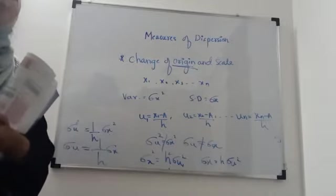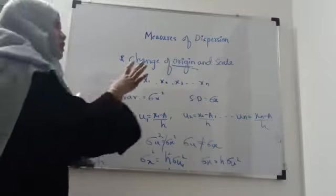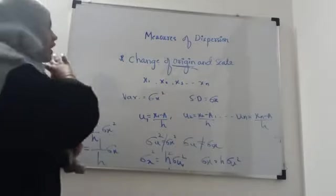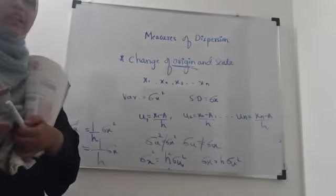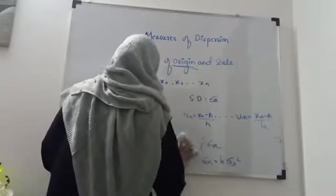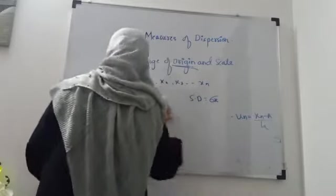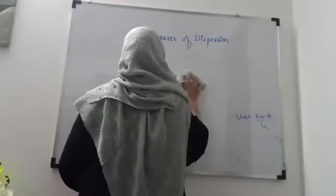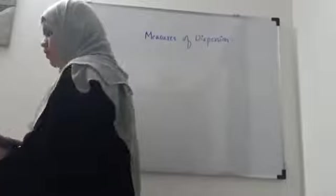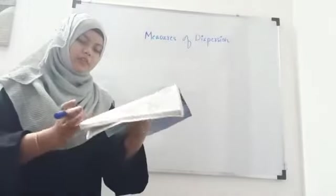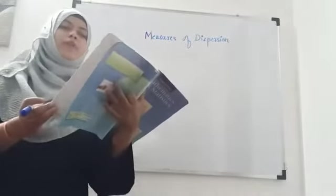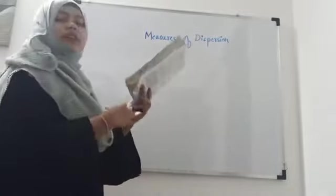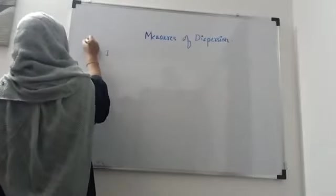Now we will solve the same problem from the previous class using the change of origin and scale method. In the previous class we solved it directly without using any change of origin and scale. Now we will do the same problem and see whether we get the same answer. I am doing problem number 5, page 183: compute the variance and standard deviation for the following data.